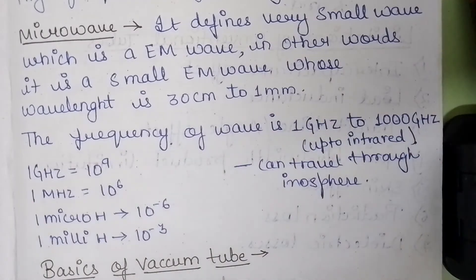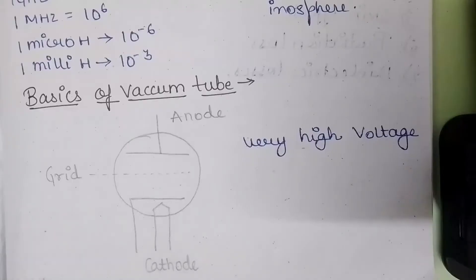1 microhertz is equal to 10 to the power minus 6 and 1 millihertz is equal to 10 to the power minus 3. Another important concept of the microwave is about the vacuum tube or the conventional tube. In this diagram you can see a vacuum tube triode. It consists of three terminals: grid, anode and cathode, and it has very high voltage.